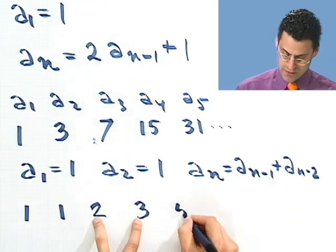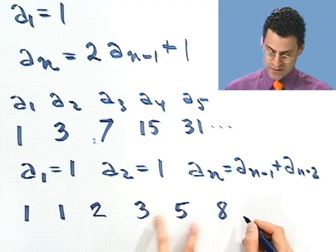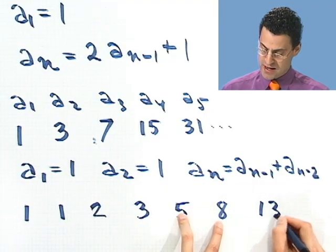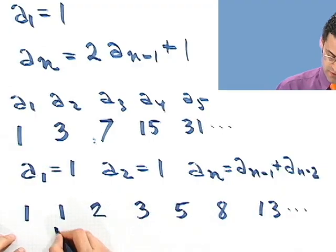The next term, I'd see 5. The next term, I'd see 8. The next term, I'd see 13. And this goes on. This sequence has a name. This is called the Fibonacci sequence.